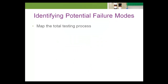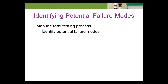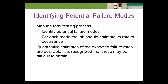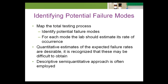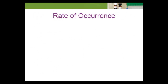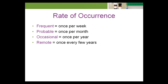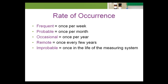The first task is to map the total testing process and identify potential failure modes that could lead to patient harm. For each mode, the lab should estimate its rate of occurrence. While quantitative estimates of the expected failure rates are desirable, a descriptive semi-quantitative approach is often employed. EP23A suggests a five-level categorization: frequent equals once per week, probable equals once per month, occasional equals once per year, remote equals once every few years, and improbable equals once in the life of the measuring system.